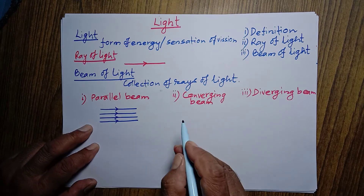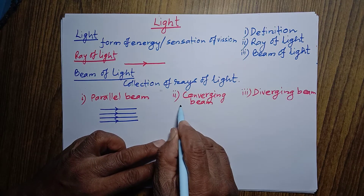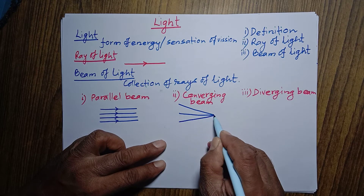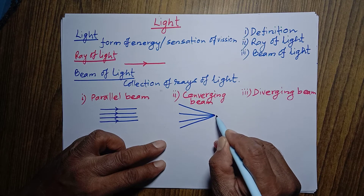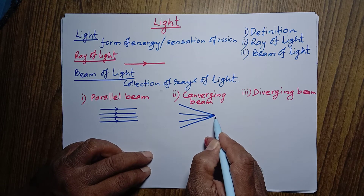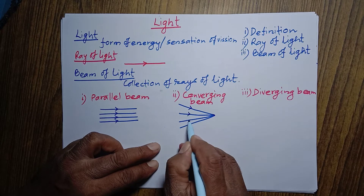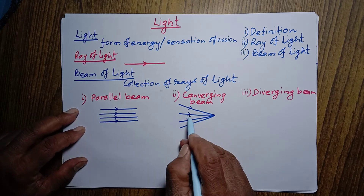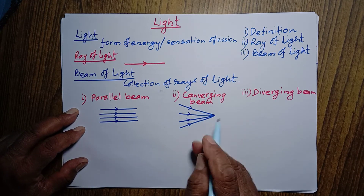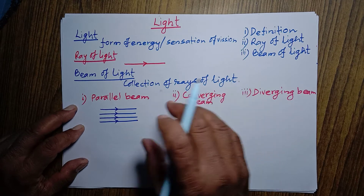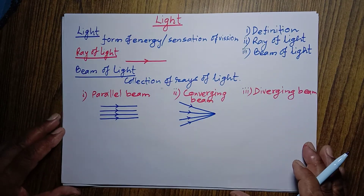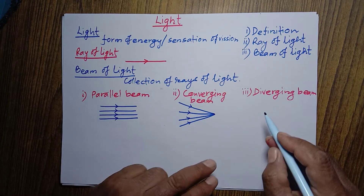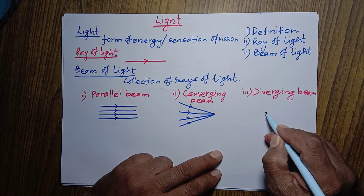Converging beam of light means light rays are coming and pointing towards one point — they are converged at this point. The light rays are not parallel. A convex lens converges the rays of light, and we can see the converging beam of light when light is refracted by a convex lens.